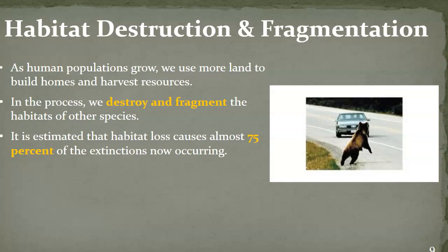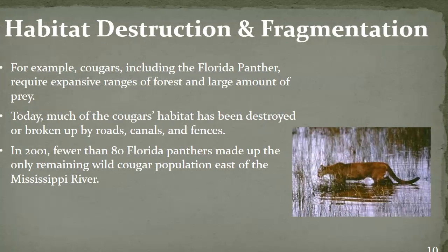Continuing with habitat destruction and fragmentation, we look at an example of the cougar, which includes the Florida panther. They have an expansive range of forest to find their prey, but we have fragmented a lot of their habitat in Florida by building roads, canals, and fences. They can no longer take the large area they needed to find prey and to exist. In 2001, scientists estimated there were fewer than 80 Florida panthers remaining in the wild population east of the Mississippi River.